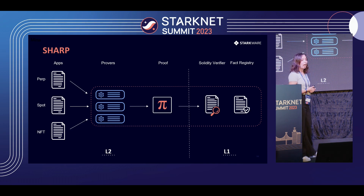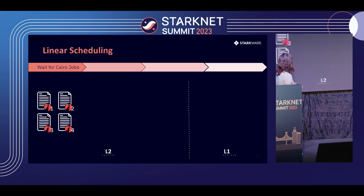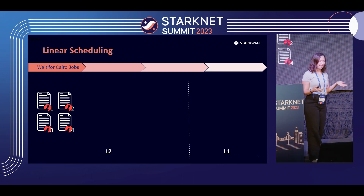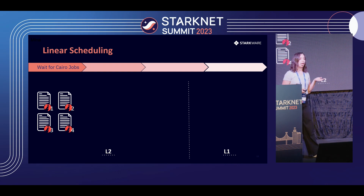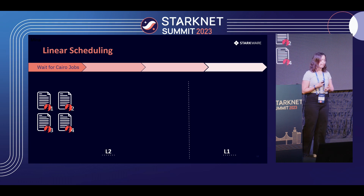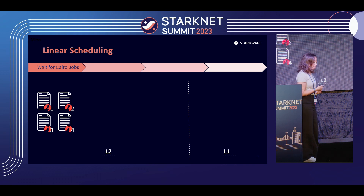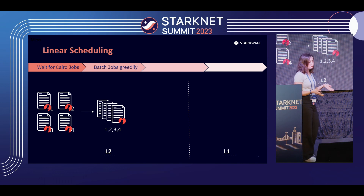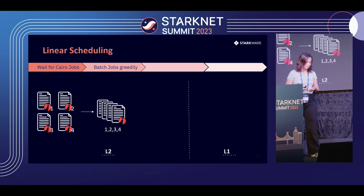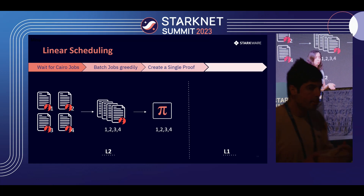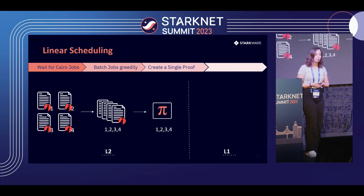I'd like to explain how exactly we schedule these jobs in the system. In the first phase — the first two years out of the approximately three years Sharp has been operating — we had linear scheduling. We were getting jobs into the system and waiting for enough jobs to arrive, then we batched them greedily — first come, first serve — until we had enough jobs to send them to the prover. Then we sent them to the Stone Prover as a batch and created a single proof for all of them together.